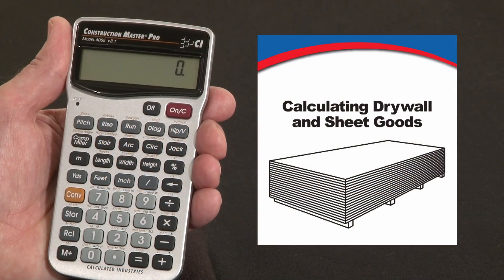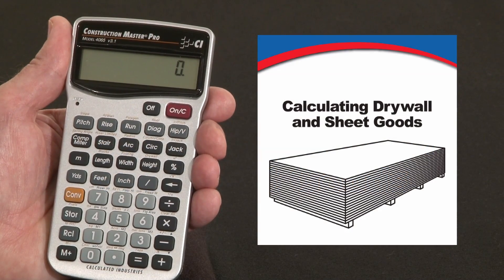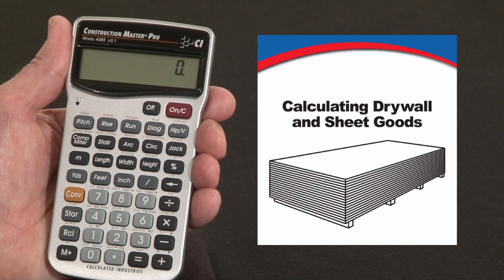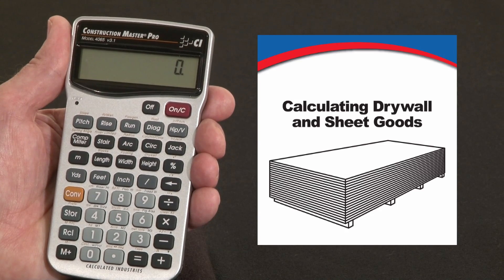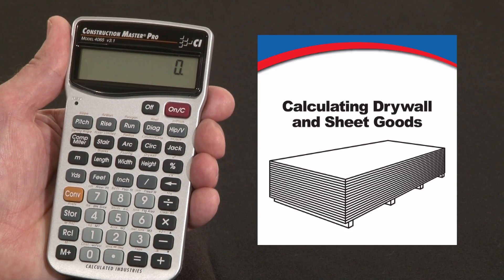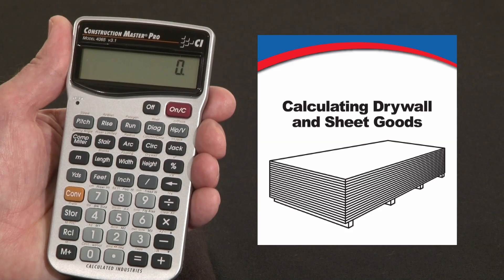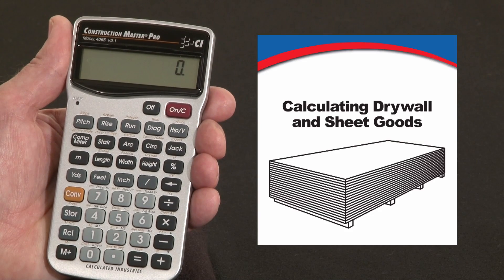Now let me show you how to calculate the number of sheets of drywall or any sheet goods using the Construction Master Pro. Keep in mind the keystrokes will be exactly the same for those of you using the desktop model. This calculation is based on the square footage of coverage needed.